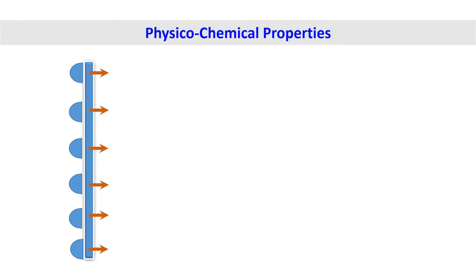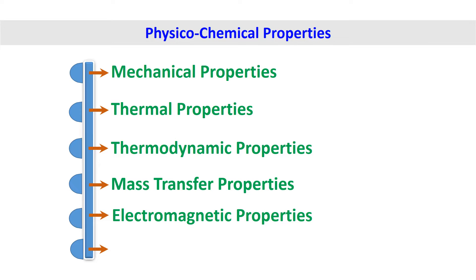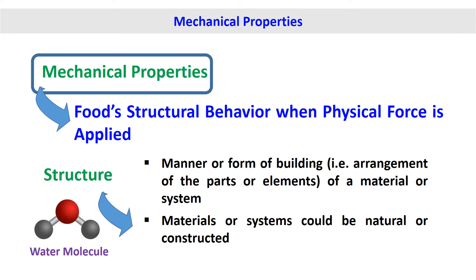Physico-chemical properties include mechanical properties, thermal properties, thermodynamic properties, mass transfer properties, electromagnetic properties, and physico-chemical constants. Mechanical properties are the food's structural behavior when physical force is applied. Structure is the manner or form of building — that is, the arrangement of the parts or elements of a material or system, which could be natural or constructed.